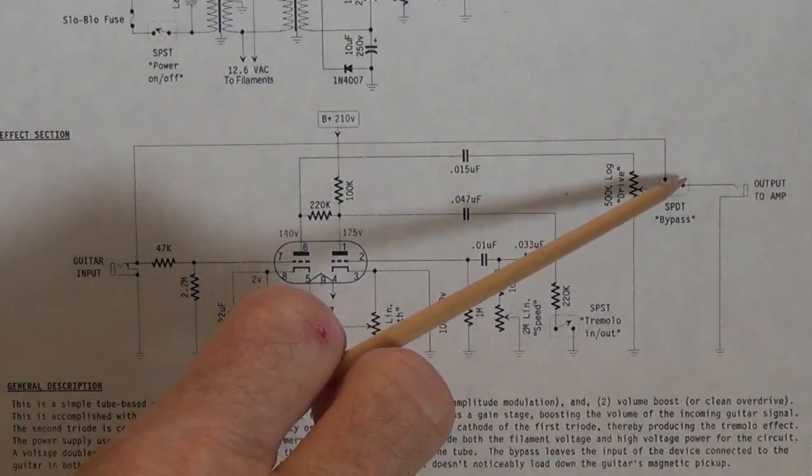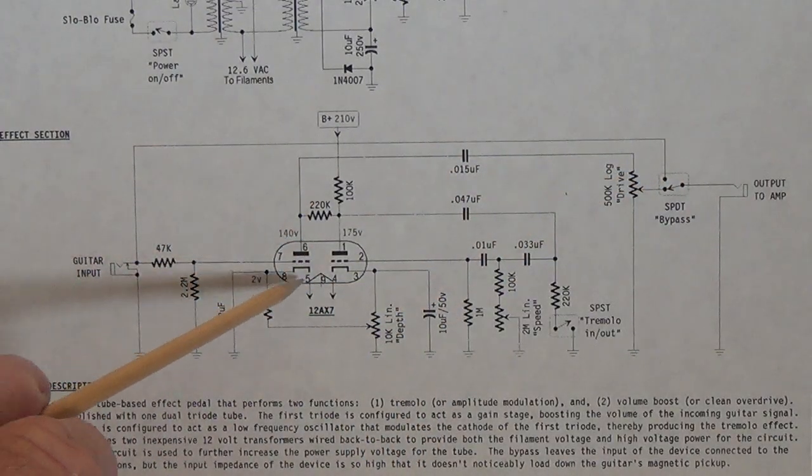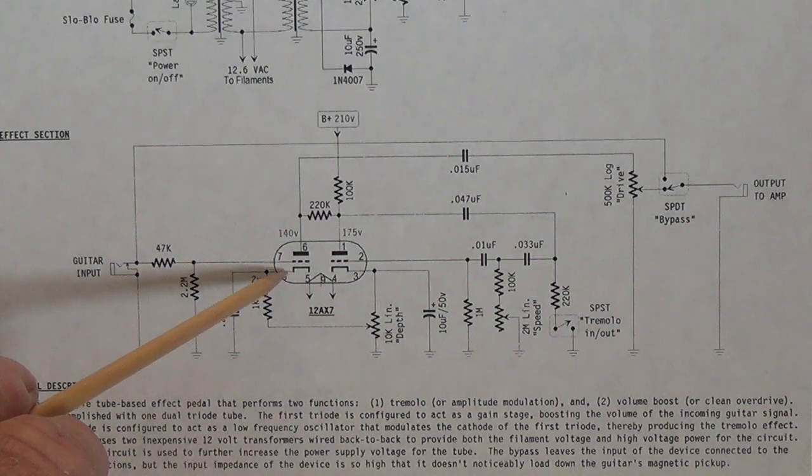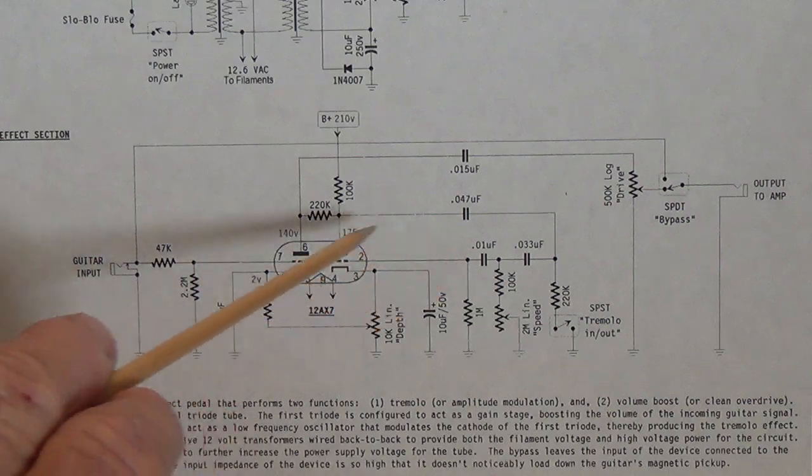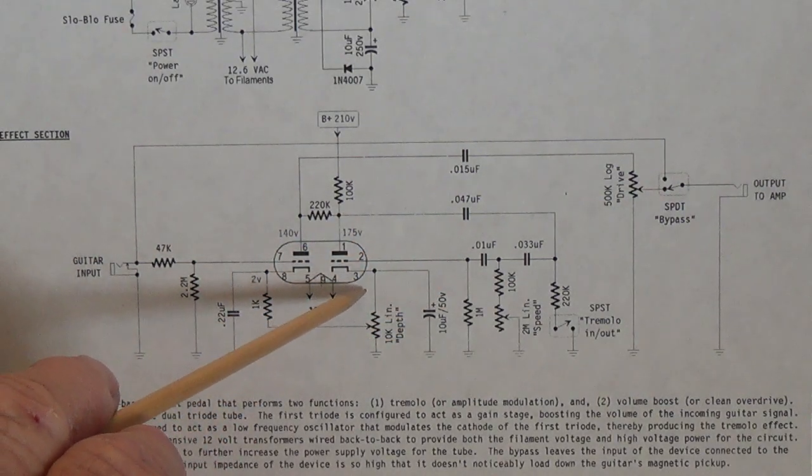So when the bypass switch is open we have a choice of either engaging an additional preamp stage which will greatly boost the output from our amplifier or we can engage the tremolo oscillator to give us a really nice tremolo effect or we can do both.